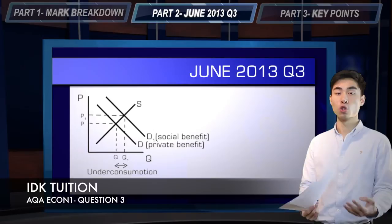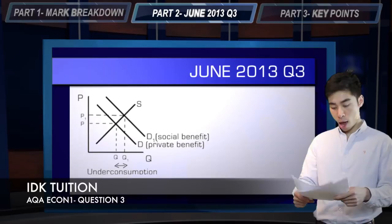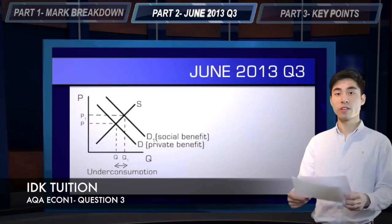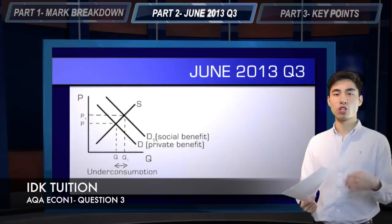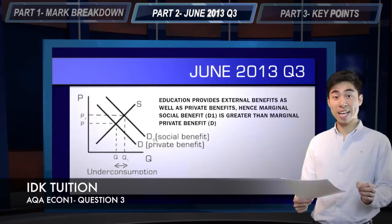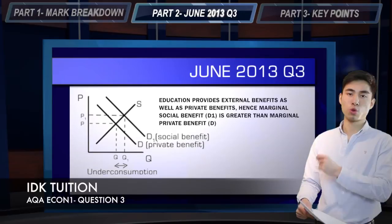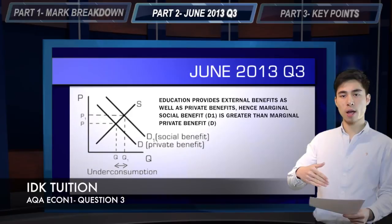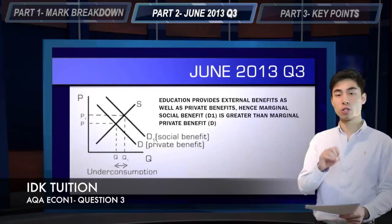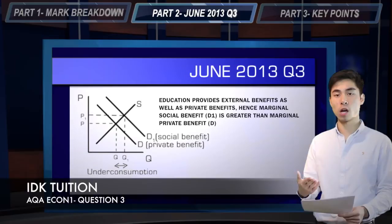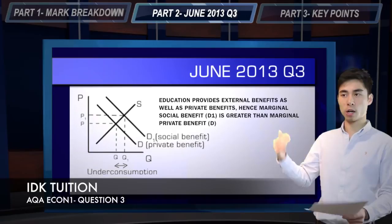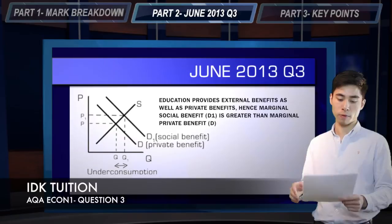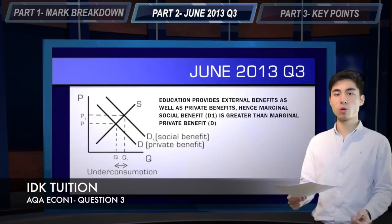So, four marks. Assuming you've picked up four marks for your definitions and relevant examples, and four marks for your diagram, you've got another four marks to pick up. This comes from your written explanation — developing what's called a chain of reasoning. Each link in your chain of reasoning gets you two additional marks. For the first link, always explain what the difference is between your two curves and what's causing the shift. Your 12-mark diagram question will always involve either two demand curves and one supply curve, or a marginal private benefit curve, marginal social benefit curve, and one marginal social cost curve — always three curves in total.